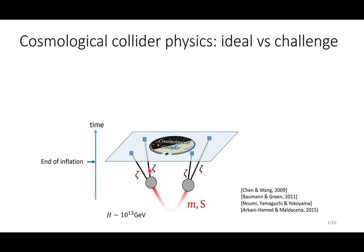The curvature perturbation carries their signatures to the end of inflation, where the curvature perturbation freezes out as classical temperature perturbations, which we observe from the CMB sky or the large-scale structure. From the correlators of these curvature perturbations, we can read out the physical information carried by these massive particles in the inflationary bulk.